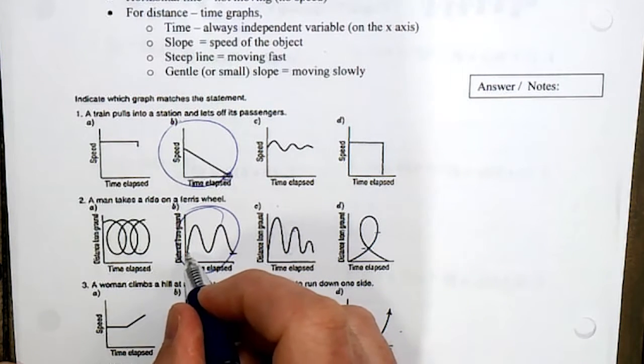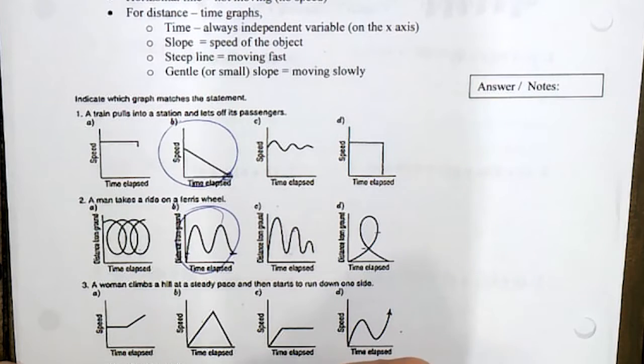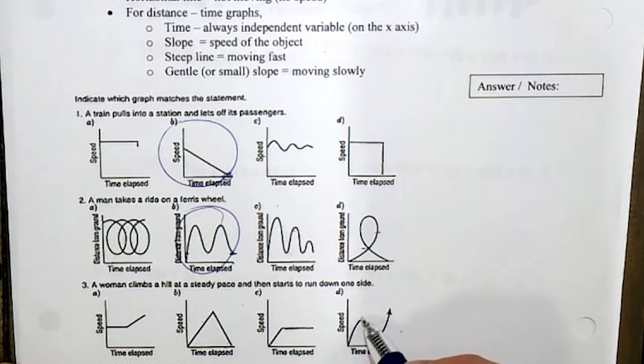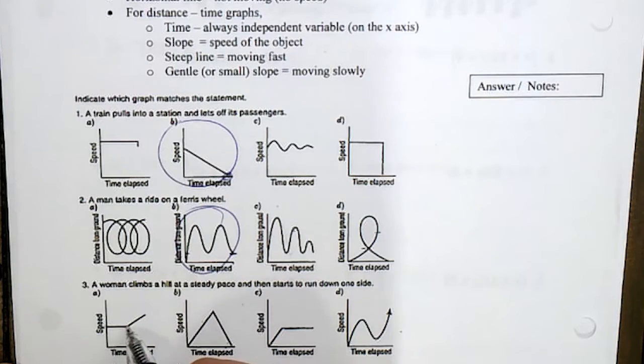A woman climbs a hill at a steady pace and then starts to run down one side. So the thing is we need a speed where it's steady. This definitely has steady. This one, she's getting faster then slower, it doesn't make sense. She's increasing her speed, she's getting faster and then steady. And this one it's all over the place - she's getting faster, slower, faster. So it really has to be this one - she keeps a steady speed and then starts running.